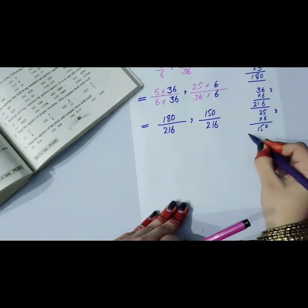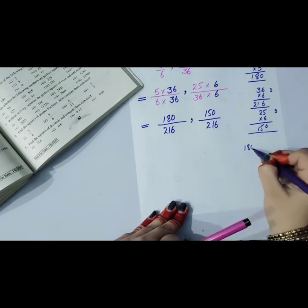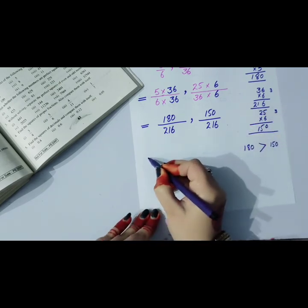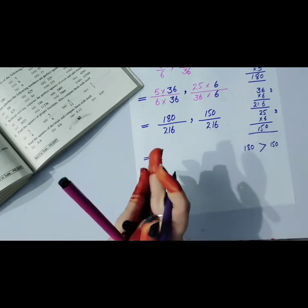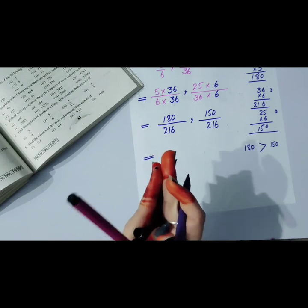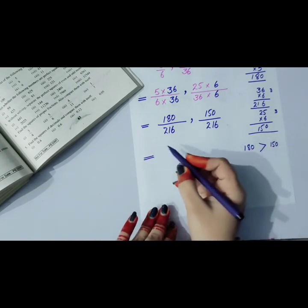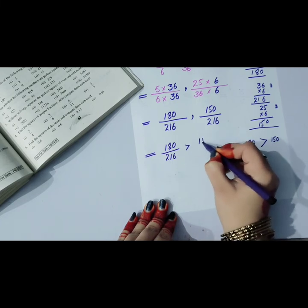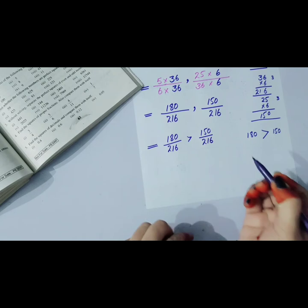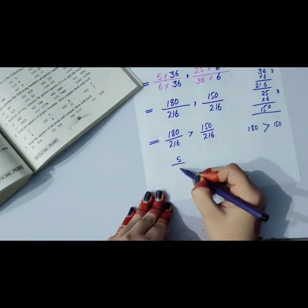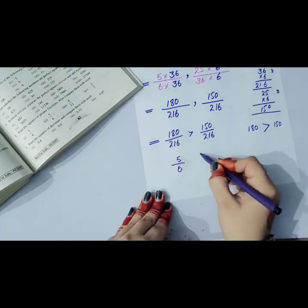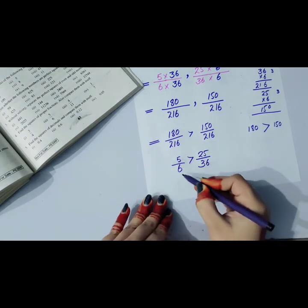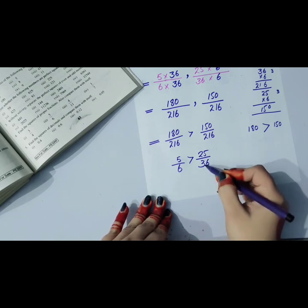Denominators are now the same. Compare the numerators: 180 and 150. The greater sign will be placed. 180 is greater, so 5 by 6 is greater than 25 by 36. This proves that the proper fraction is greater than the squared fraction.